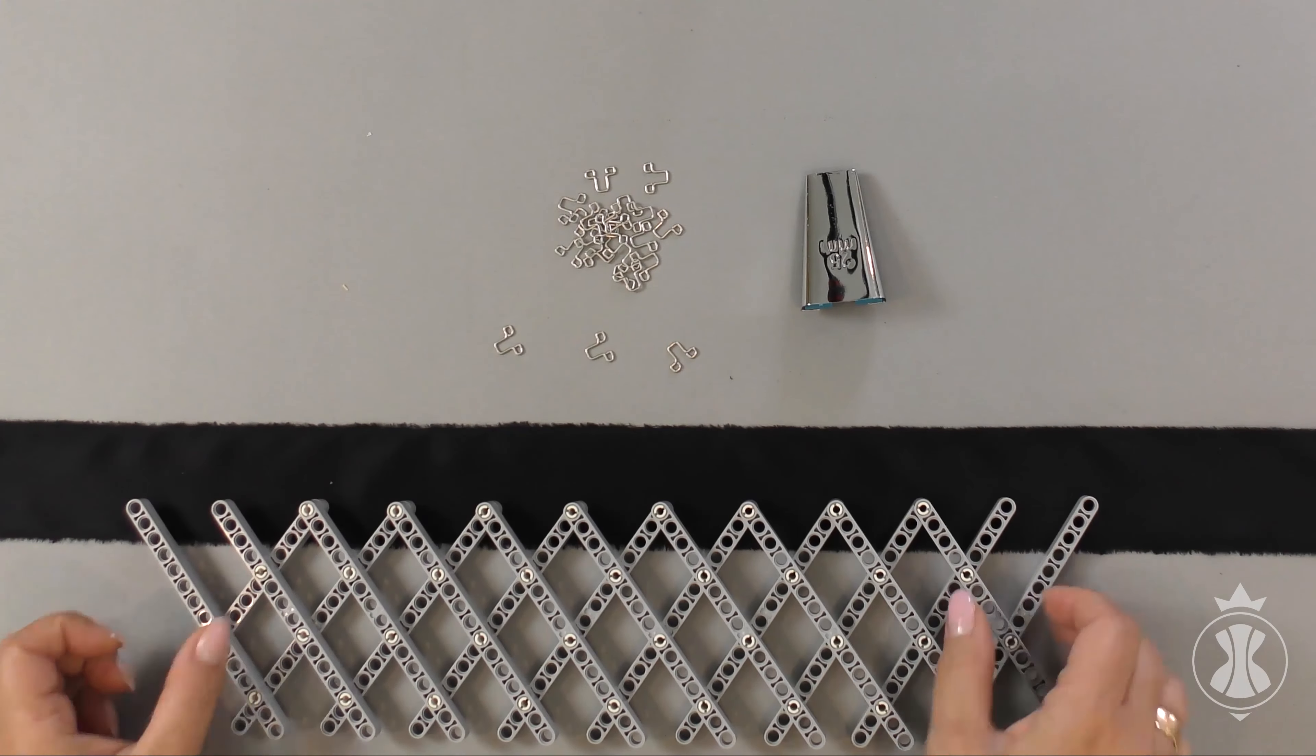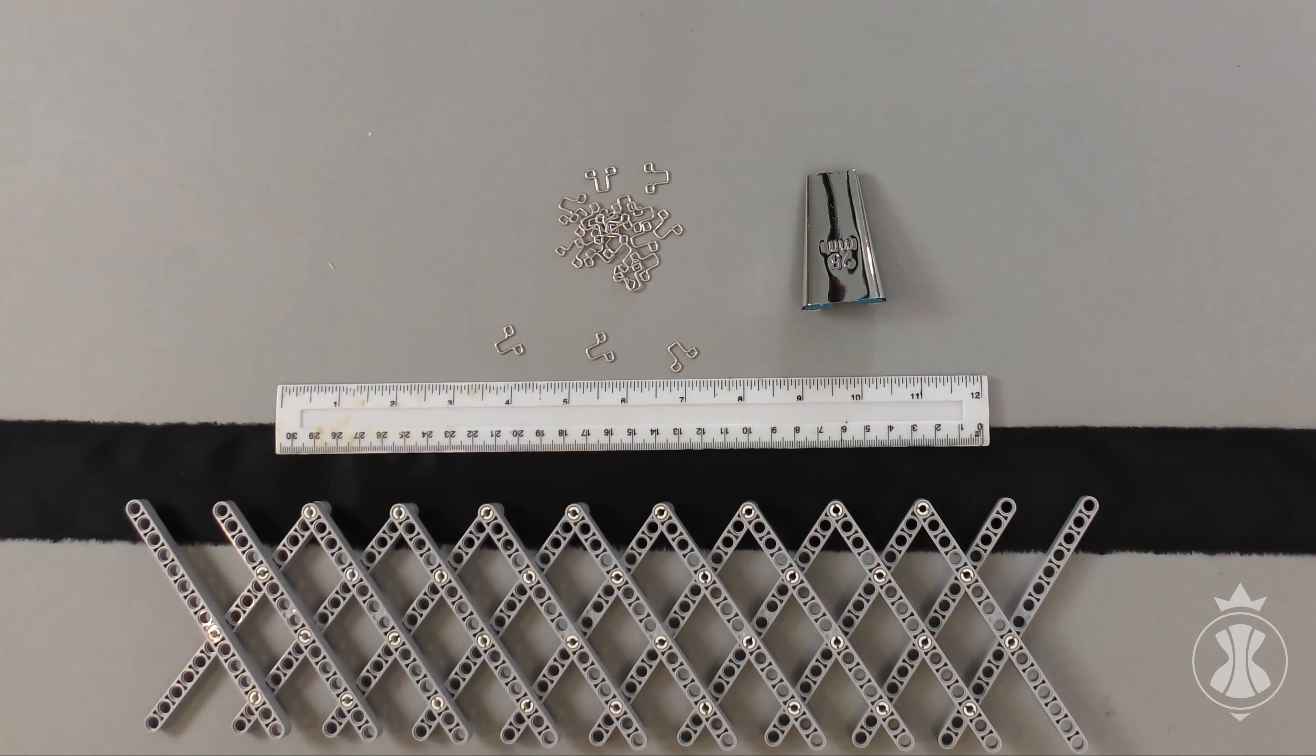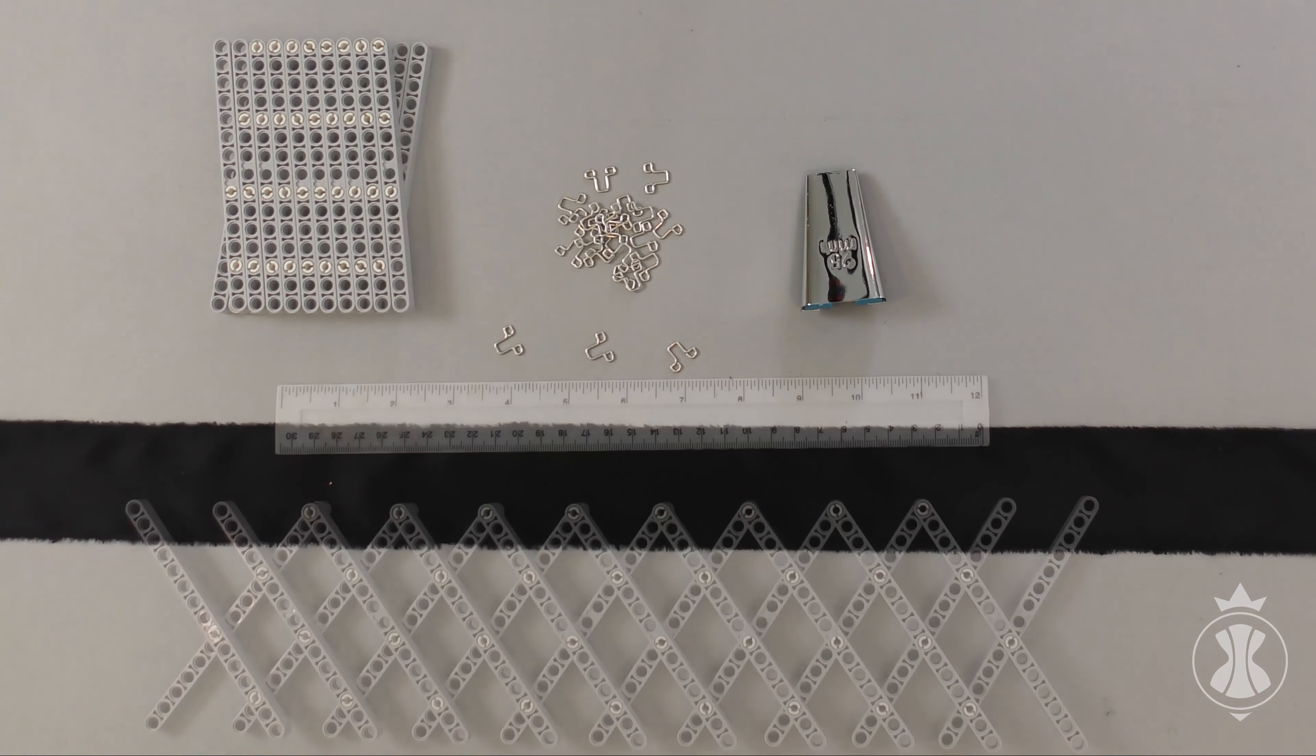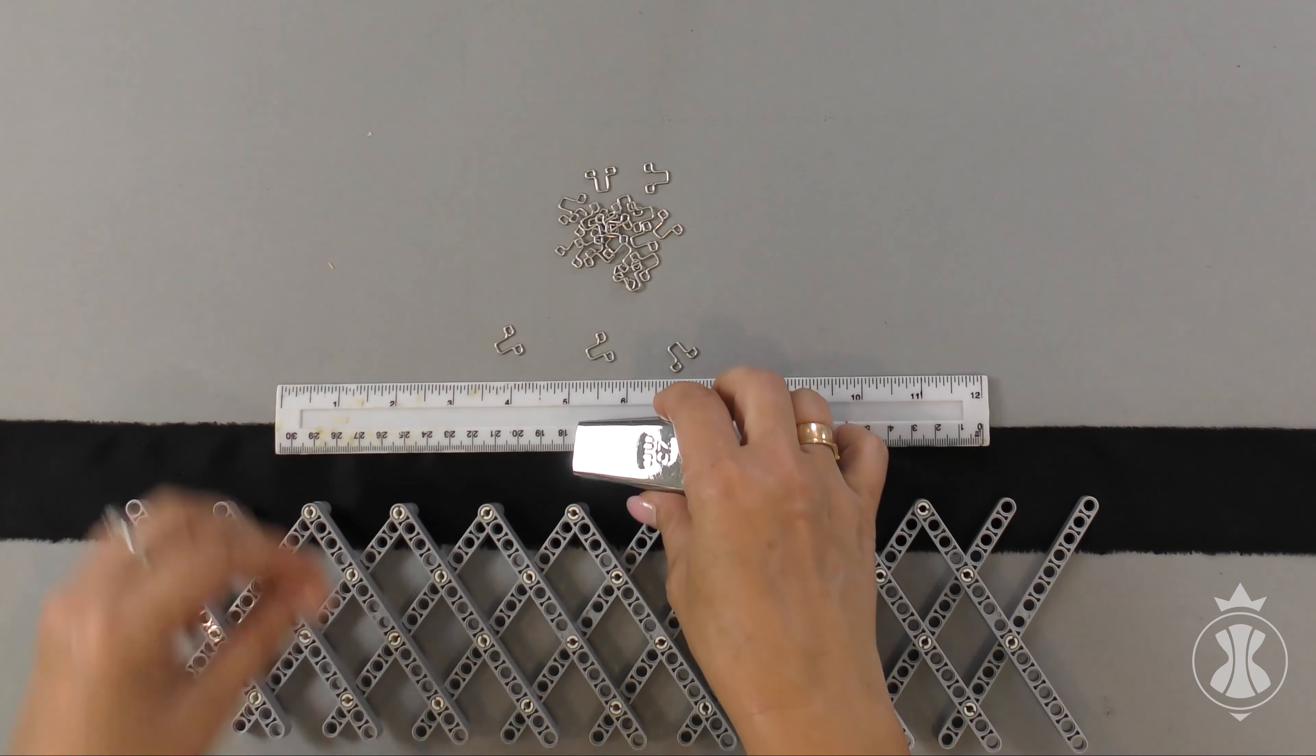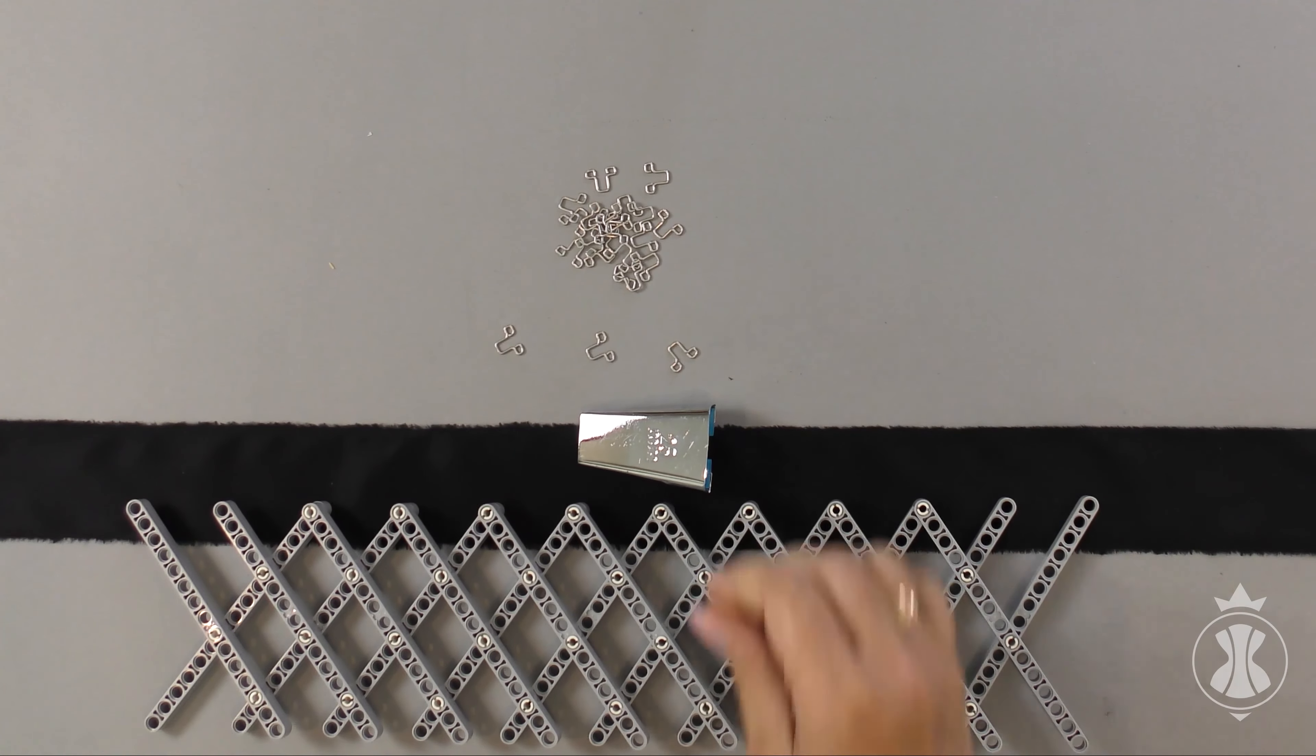You will need a pantograph to mark the position of the loops or a ruler. Loops of the required size. A device for making a 2 mm wide bias tape. And, of course, an iron.